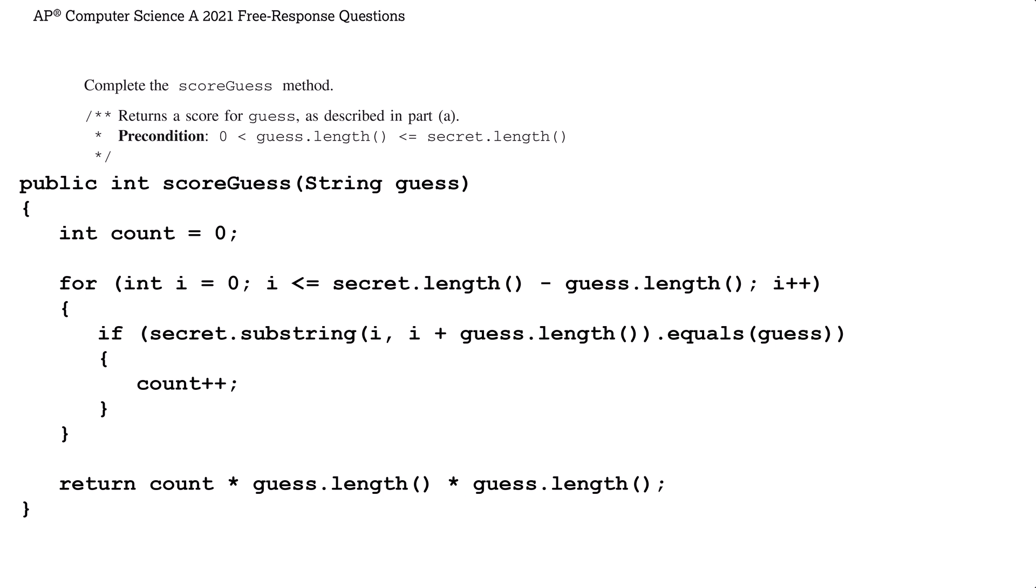After the loop, we have the total count of occurrences of guess in the secret string. We calculate and return the score, which is the product of count, the length of the guess, and the length of the guess again.